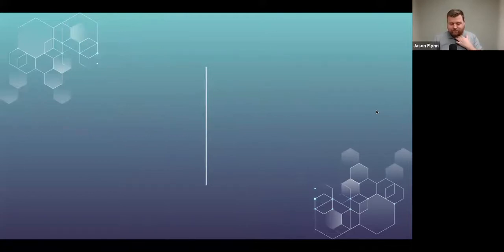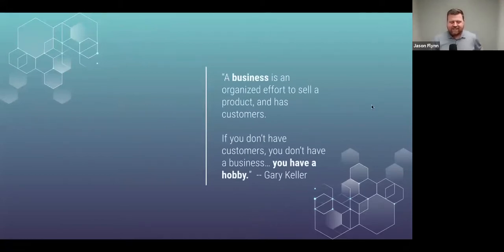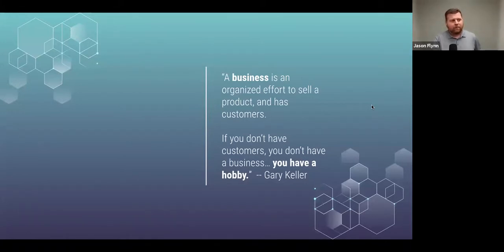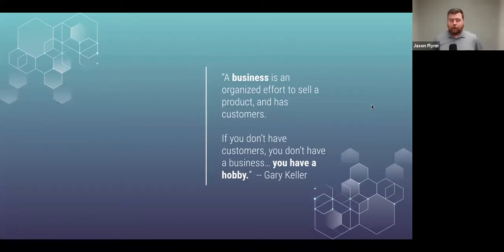Gary Keller says a business is an organized effort to sell a product and has customers — but if you don't have customers, you don't have a business, you have a hobby. We're going to talk about going E to P, entrepreneurial to purposeful, in your business. That agent doing over 50 transactions a year is fantastic, making tons of money, but he's in that E category — relying on word of mouth. If you're not being purposeful with it, you actually don't know what opportunities you're losing. He might actually have a hobby because he has customers but isn't communicating with them in the way we're going to talk about today.